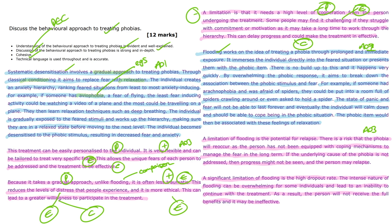The answer then moves back to AO1 material and gives a description of flooding. This is characterised by the immediate and intense exposure to the phobic stimulus, with the main aim of overwhelming the phobic response to break down the association between fear and the stimulus. Again, specific examples like arachnophobia are used to illustrate this process, reinforcing and demonstrating further understanding by providing concrete instances of the treatment in action.